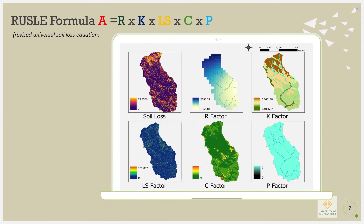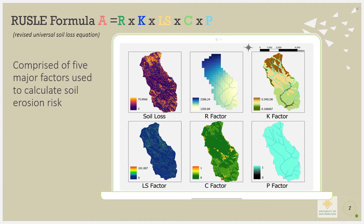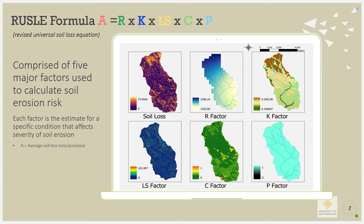The RUSLE formula: A equals R times K times LS times C times P. RUSLE is comprised of five major factors used to calculate soil loss. Each factor estimates a specific condition that affects the severity of soil erosion. A equals the average soil loss in tons per acre per year.